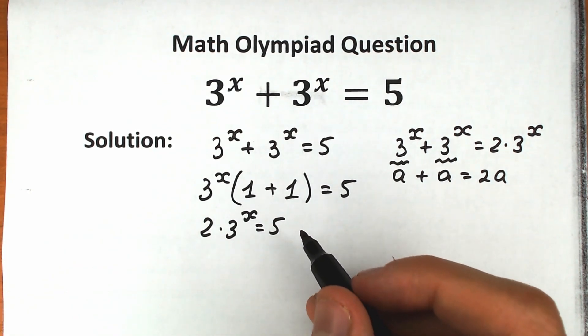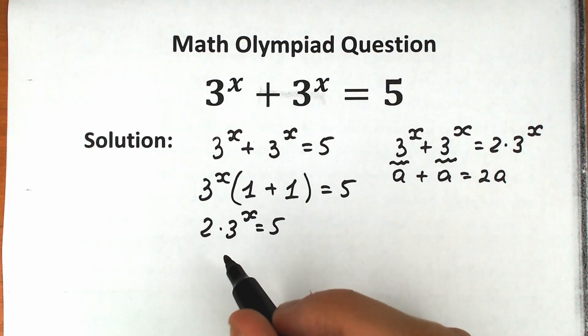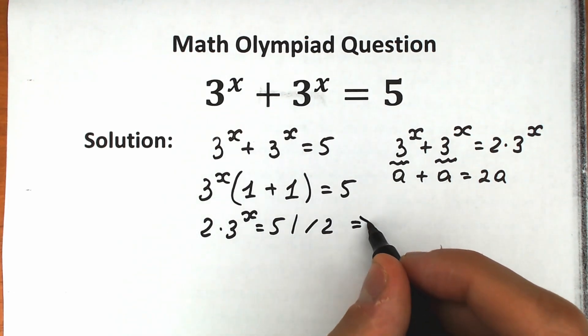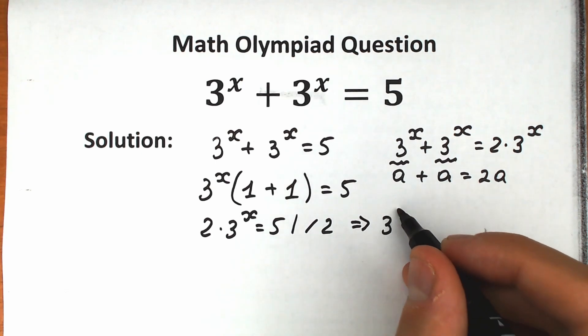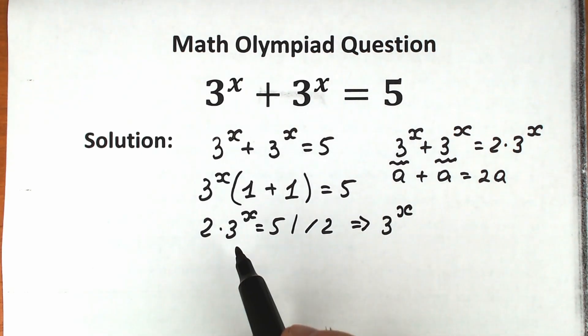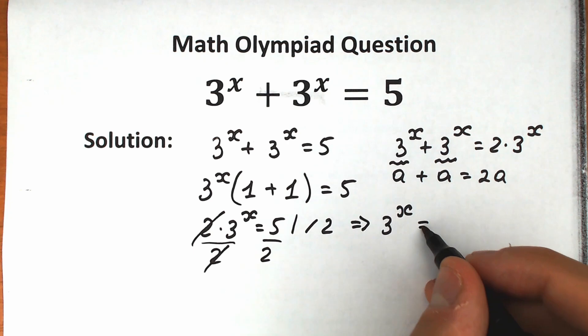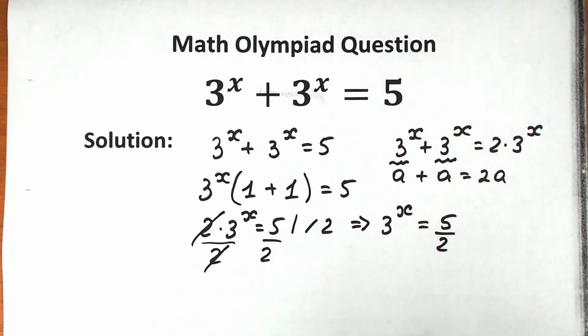What are we going to do next? Let's divide both sides by 2, because right here we have x and here we have our constant. Let's bring this constant from left to right, so let's divide both sides by 2. If we divide both sides by 2, we have 3 to the x, because we can easily cancel this. If we have 2 and 2, we cancel 2 from here, 2 from here. So 3 to the x equal to 5 over 2. So 3 to the power x equal to 5 half.